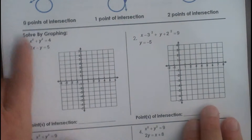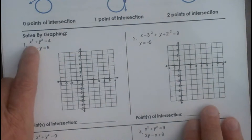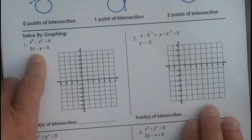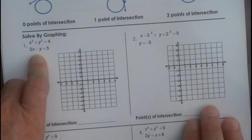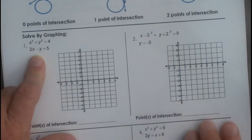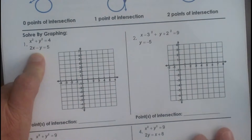We are going to look at what these graphs look like and how many points of intersection there are. You need to know how to graph a circle, which we just learned in the last lesson, and how to graph an equation of a line, which you probably started learning in about seventh grade.